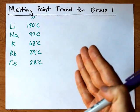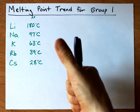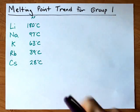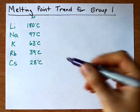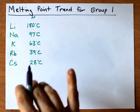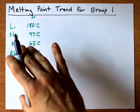which is completely the opposite of what you expect if you're considering London dispersion forces, dipole-dipole forces, and things like that. But the key to why this is the case has to do with the structure of metals.